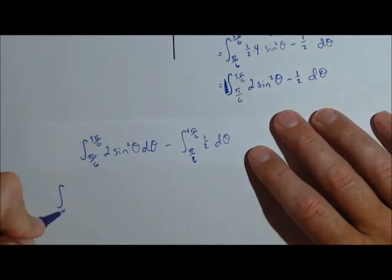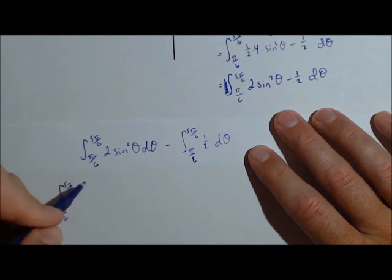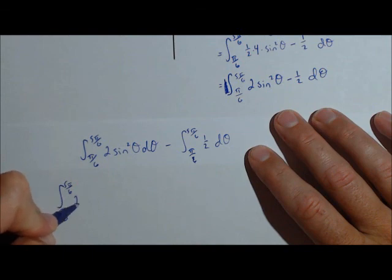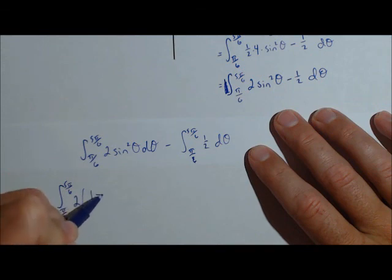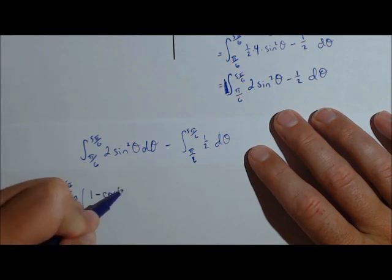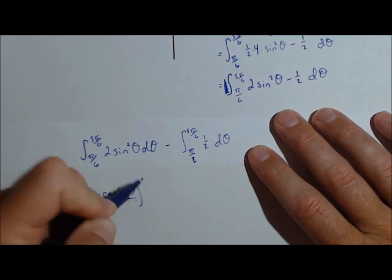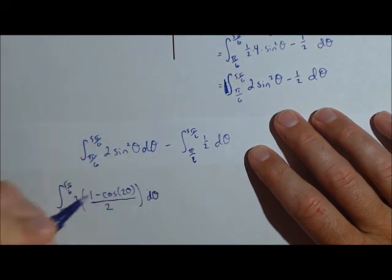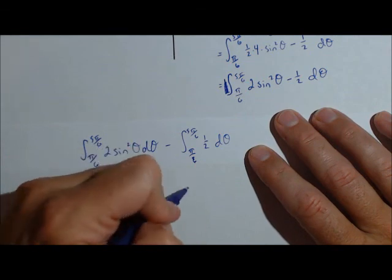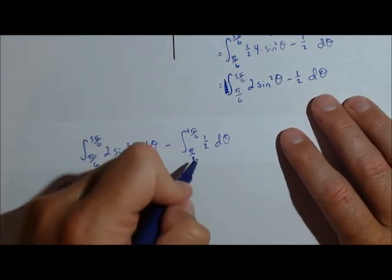So we're going to go from pi over 6 to 5 pi over 6 of 2, and now we're going to use a half angle identity, which is 1 minus cosine of 2 theta over 2 d theta, minus.